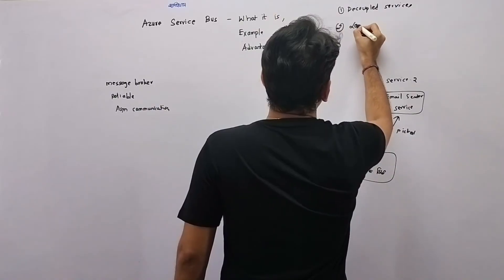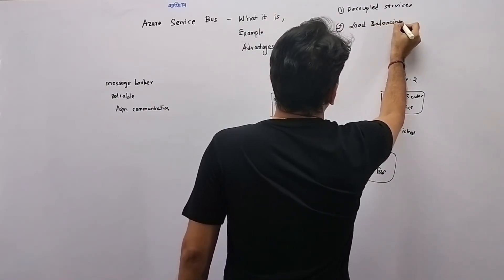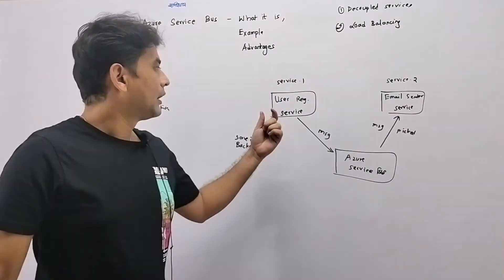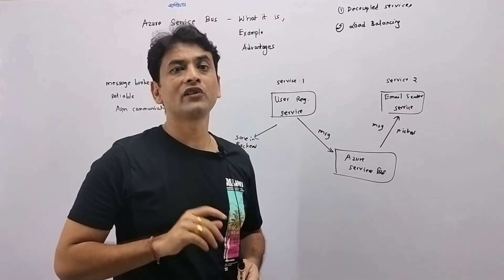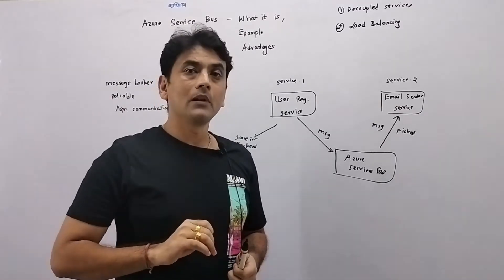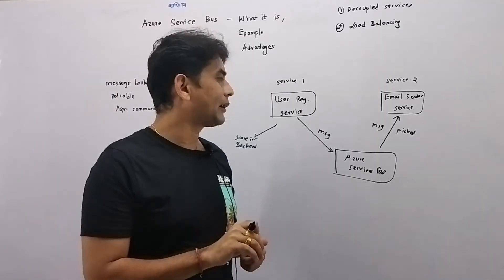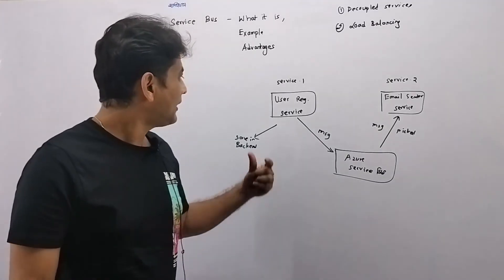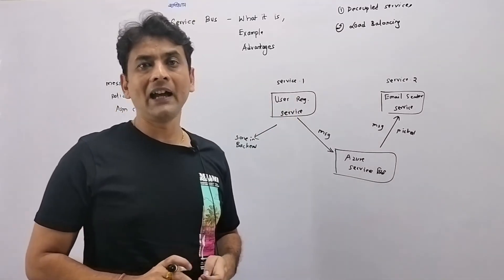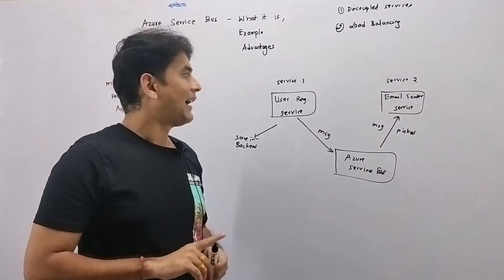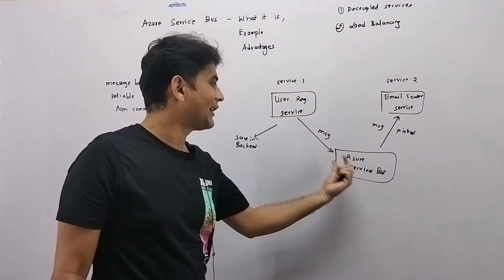And second example is load balancing. And let's try to understand this. Say within a very short time, this user registration service gets a lot of user requests. So huge number of users have requested or registered themselves within this service in a very short time. So of course, the load on this user registration service will be high and that probably we cannot avoid. But after that,